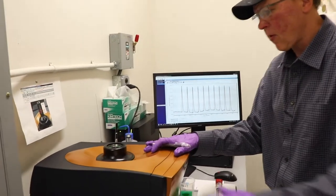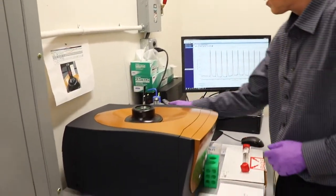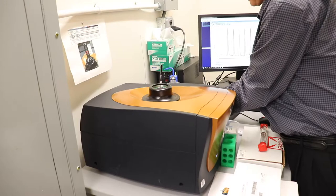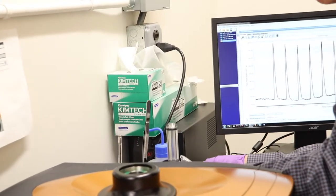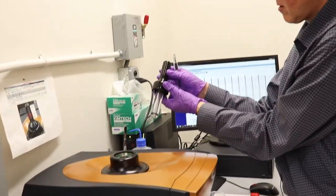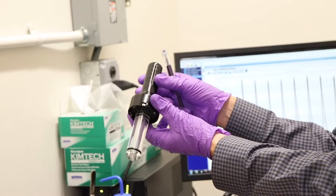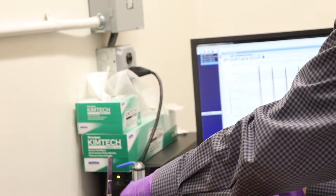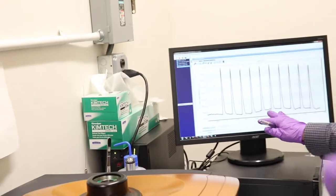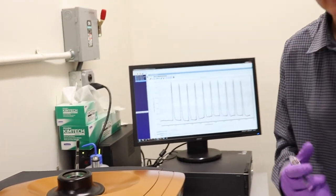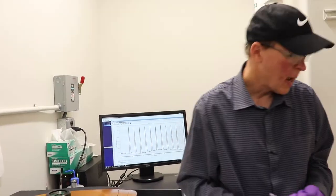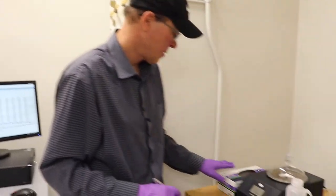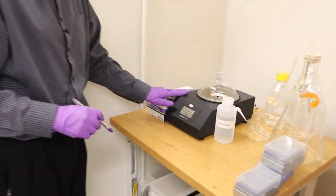So this is our ITC unit here. Back here we have a little tool holder where our syringe and burette holder are stored. This is the burette syringe holder. This is our control computer which you can access remotely for longer experiments so you can monitor them back from your lab. Over here, this is our degasser.